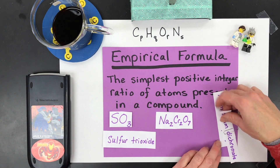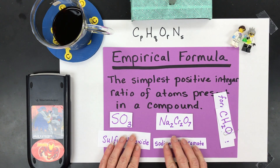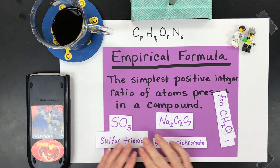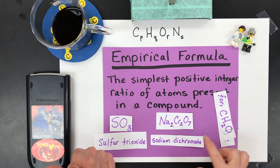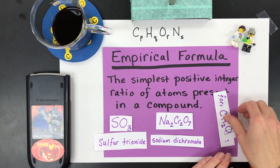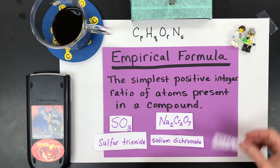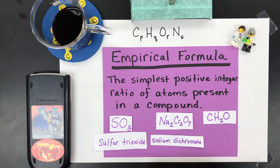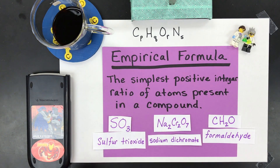Next, sodium dichromate. You wouldn't believe how many times I've seen that thing named wrong as a teacher. But it is called sodium dichromate — two sodium atoms, two chromium atoms, seven oxygen atoms. You can't reduce it anymore, so that is the simplest positive integer ratio. Then we've got a fun organic molecule called formaldehyde. So these are all called empirical formulas.